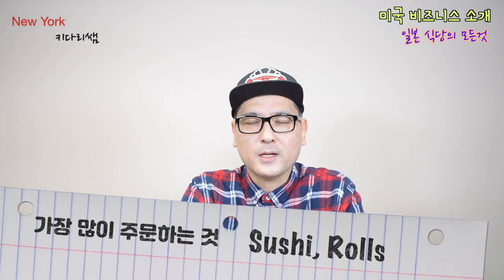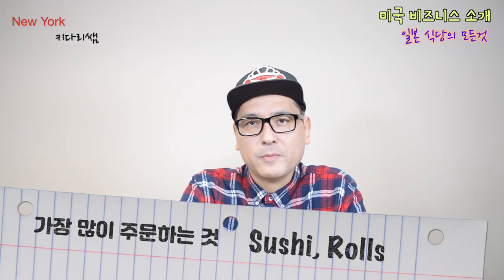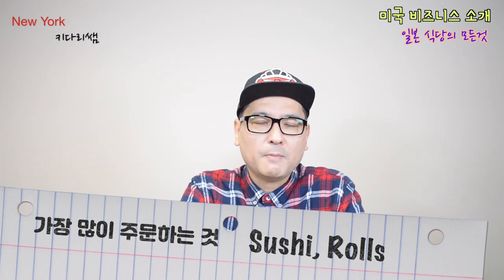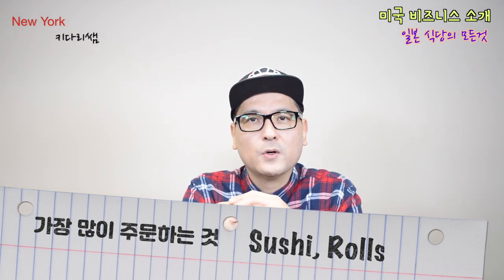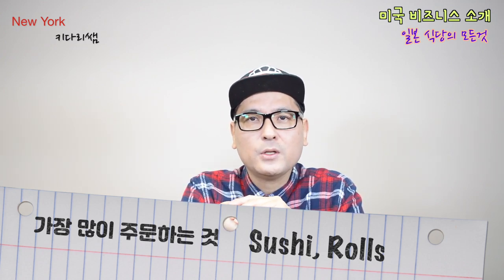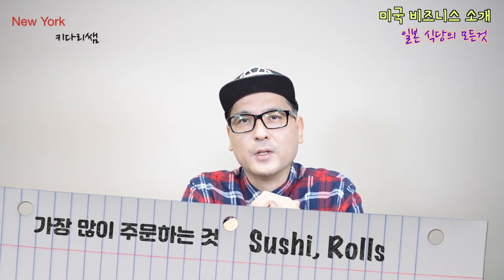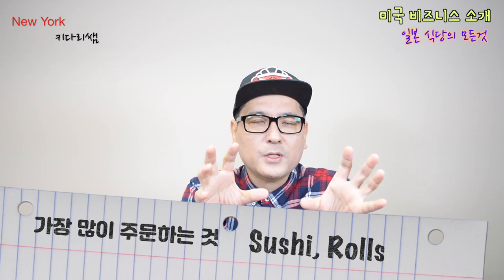일본 식당에서 사람들이 제일 많이 주문하는 건 스시와 롤입니다. 그리고 plus alpha로는 벤또라 그래서 도시락이죠. 런치 박스라든지 런치 스페셜, 디너 박스, 디너 스페셜이 주력으로 나가야 되는 메뉴 중 하나입니다. 최근에는 경쟁 가게와의 차별을 갖기 위해 다양한 아이디어를 내시는 분들이 많습니다.